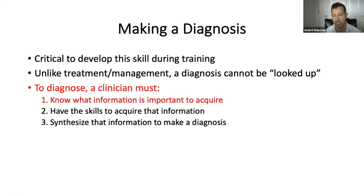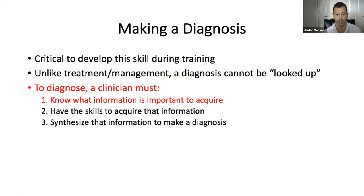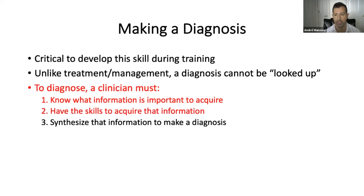Number one, the clinician has to know what information is important to acquire from a particular case. You don't want to ask a head-to-toe review of systems on every patient hoping to stumble upon a clue, or perform a head-to-toe physical exam hoping to stumble upon a finding, or order every lab test imaginable. You want to let the case information dictate and guide you in terms of what information you need to acquire. It's not enough to know what's important — you have to have the skills to acquire that information.